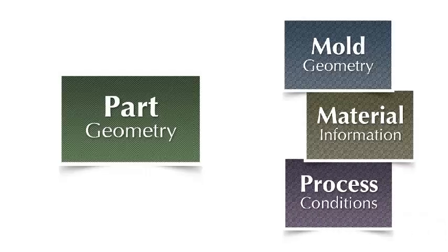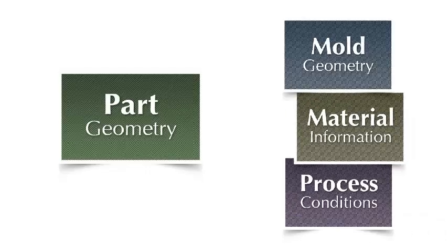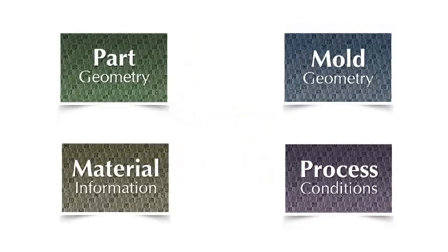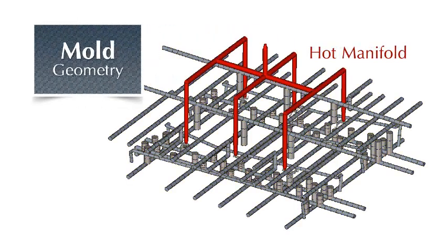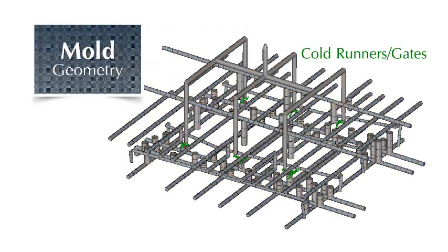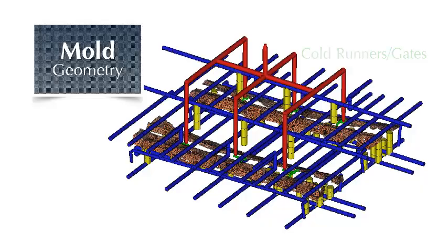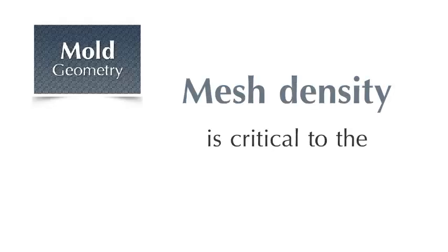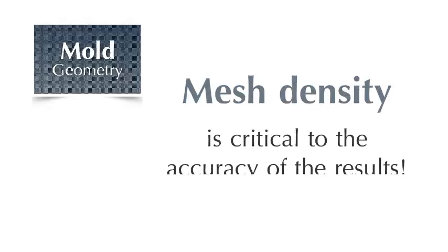As was the case for part geometry, it is equally important to have an accurate representation of each of these. For the mold, the cooling lines, hot manifold, cold runners, and gates must all be modeled, along with any cooling inserts made out of a different material than the main cavity and core blocks. Mesh density in these components is also critical to the accuracy of the results.